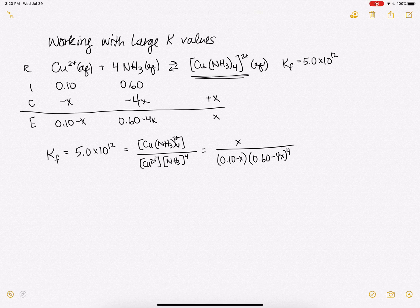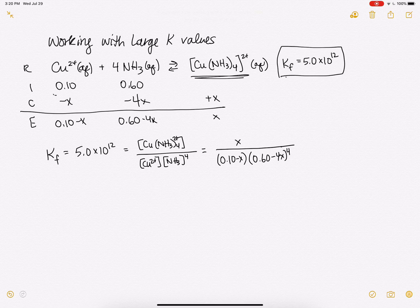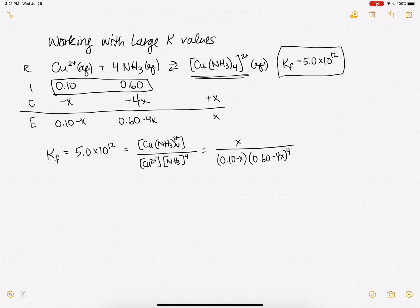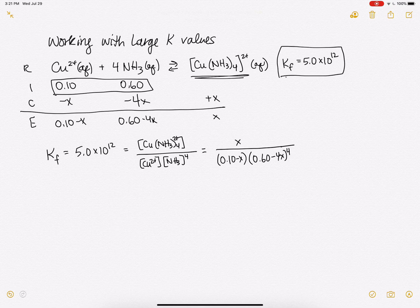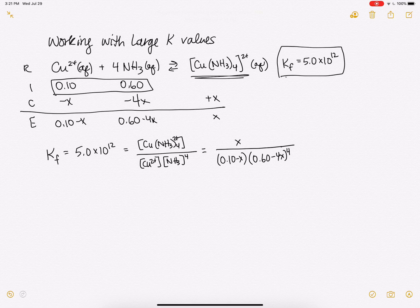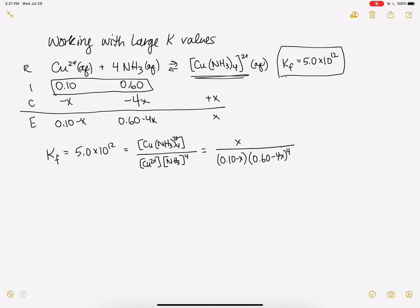Well, we know that our K is very large and we know that we're starting with all reactants. And so actually we expect that most of it will disappear. X will be pretty close to 0.1 in this case, and so we can't use a small X approximation. So what are we supposed to do? What we're going to do instead is we're going to make basically fake initial conditions here.